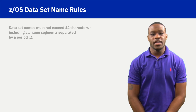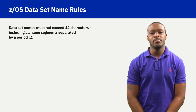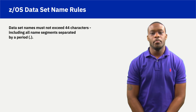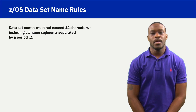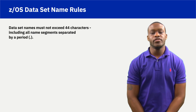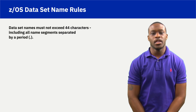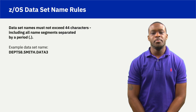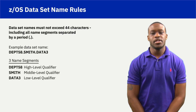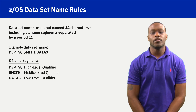Dataset names must not exceed 44 characters including all named segments and periods, where named segments are separated by a period. A dataset name can be from 1 to a series of 22 joined named segments. Each named segment represents a level of qualification. For example, the dataset name DEPT58.smith.data3 is composed of three named segments. The first name on the left, DEPT58 in this example, is called the high-level qualifier.